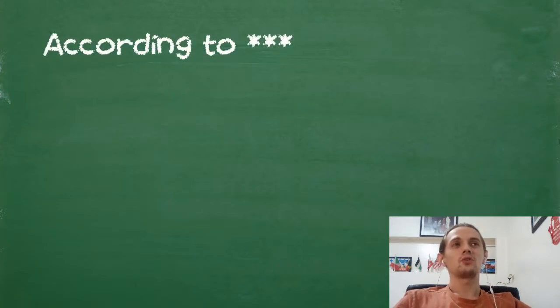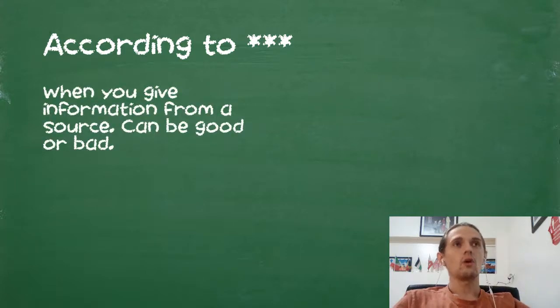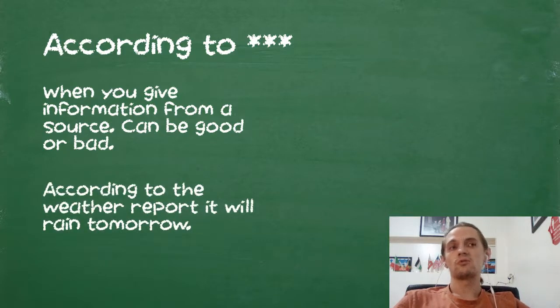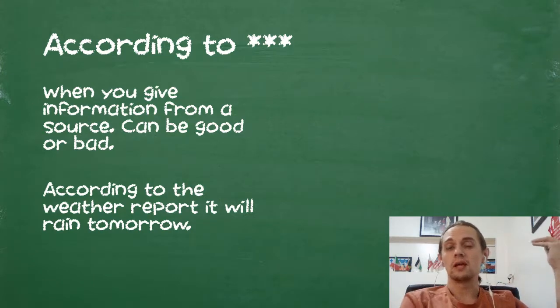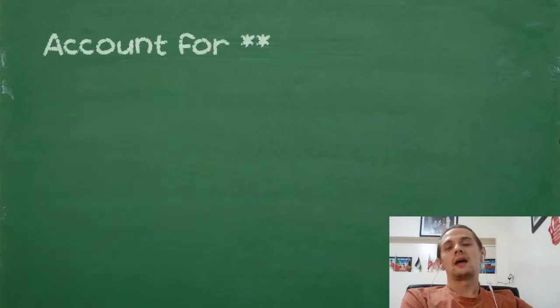Okay, so the first one too is according to, and I put this one with three stars. So according to, when you give information from a source, and it can be good information or can be bad information. So according to the weather report, it will rain tomorrow. We get that information from the TV, and we don't know for sure. Sometimes it's true, sometimes it's not true.